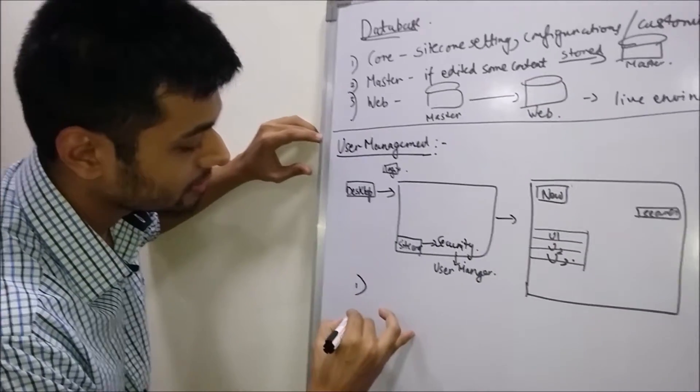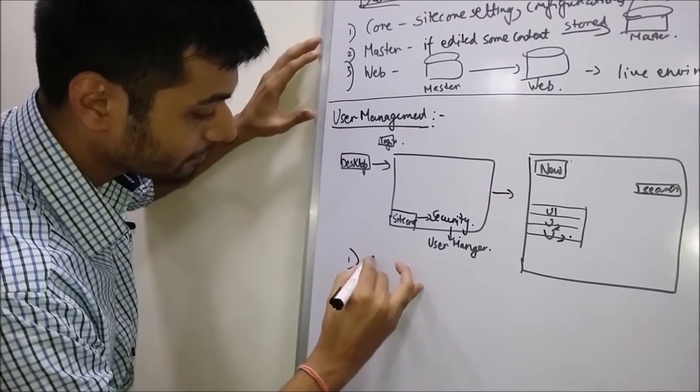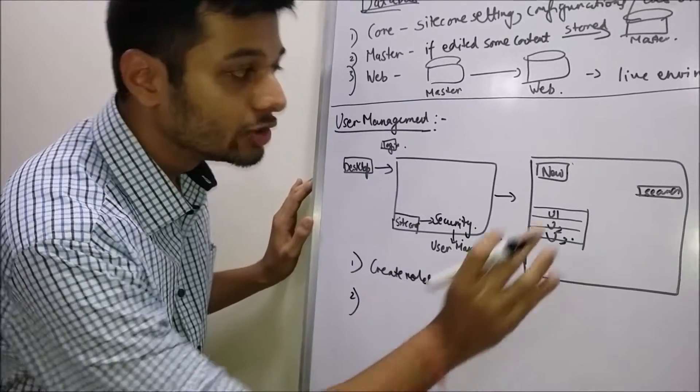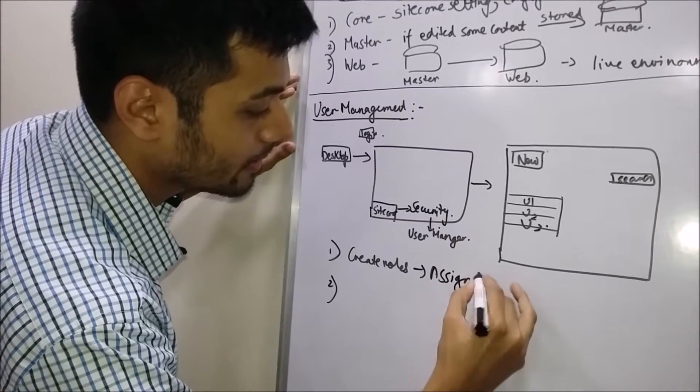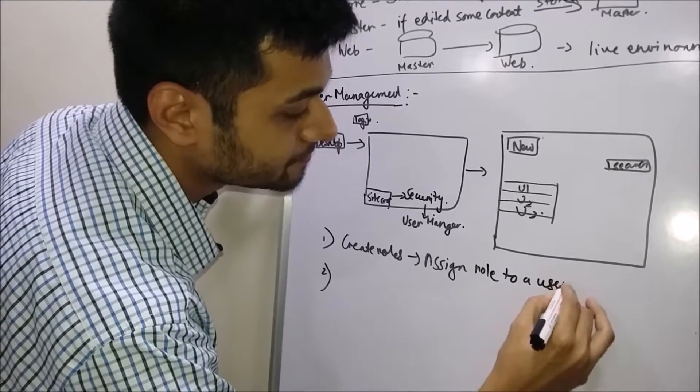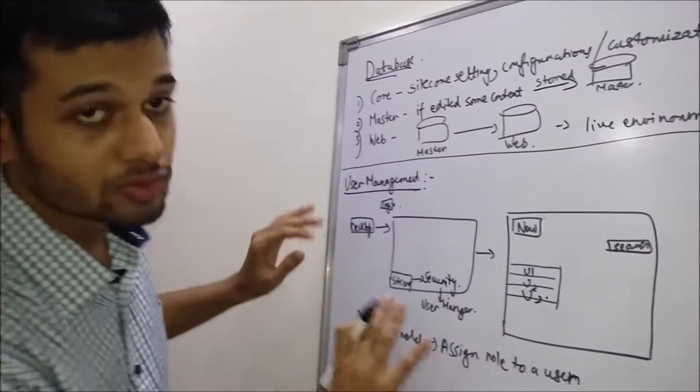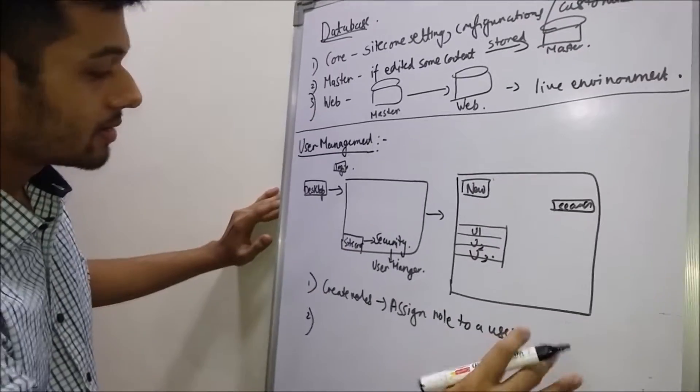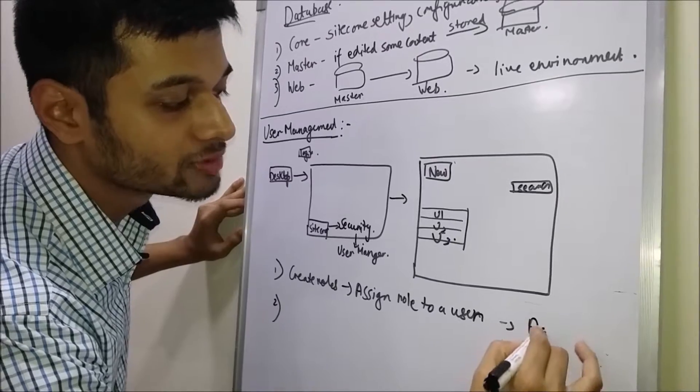So the first thing is that either you create roles and then assign these roles to that particular user. Whenever you assign this role to a user, whatever access rights this role has, it will be reflected inside this user and user will get access. So this is about given access to a role, role specific.